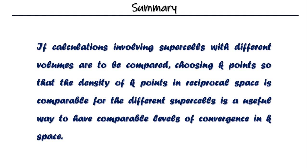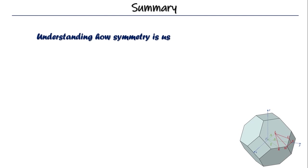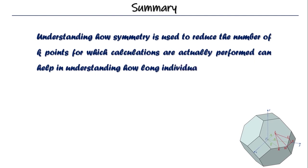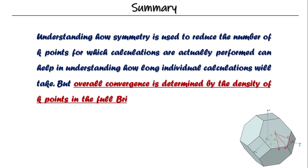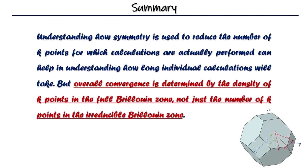The fifth point is, having a clarity of how symmetry is used to reduce the number of k-points for which calculations are actually performed, can help in understanding how long individual calculations will take. But, overall convergence is determined by the density of k-points in the full Brillouin zone. Okay? And, of course, as you have seen, appropriate methods must be used to accurately treat k-space for metals.